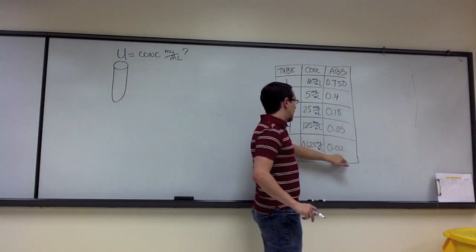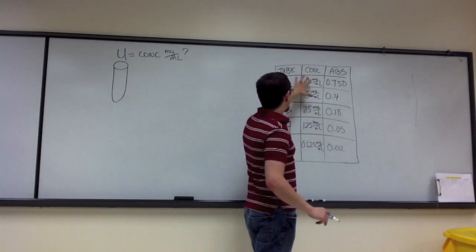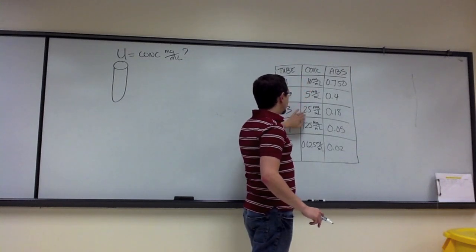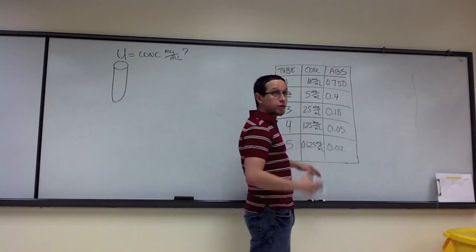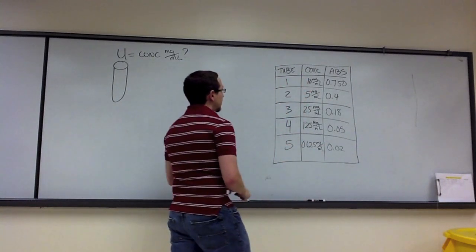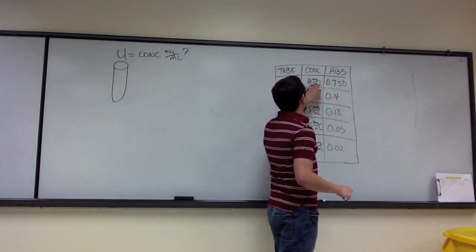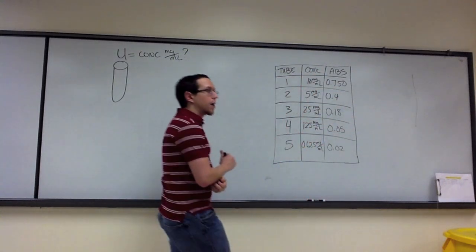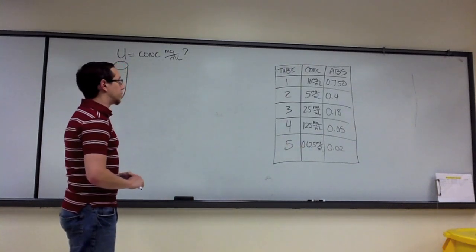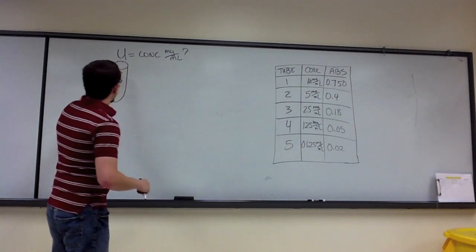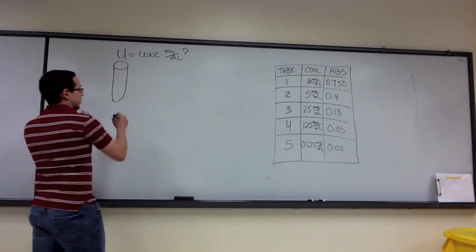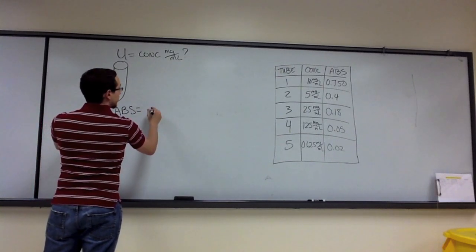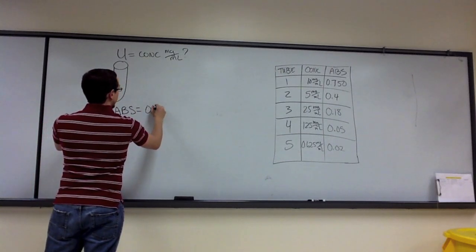These absorbances were obtained using the spectrophotometer. I knew the concentration of my starting value and calculated each of the corresponding concentrations as previously shown. I got these absorbances by placing each tube into the spectrophotometer after I properly calibrated it using the blank. Now, let's say I put my unknown into the spectrophotometer and it gives me an absorbance of 0.32.